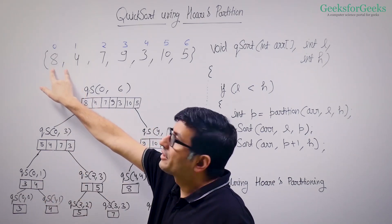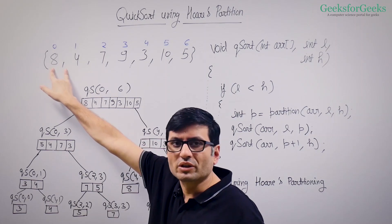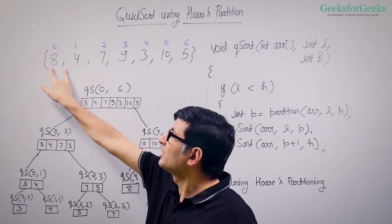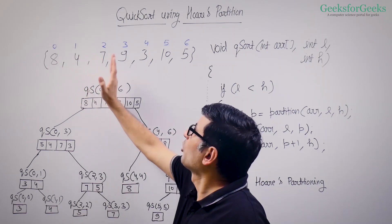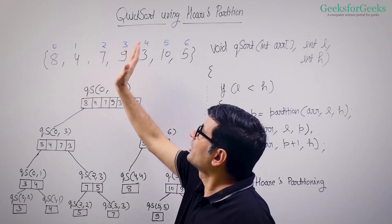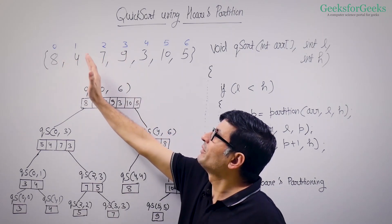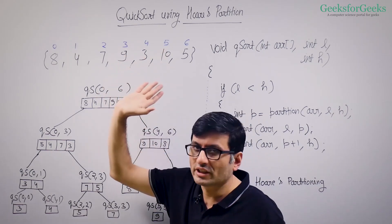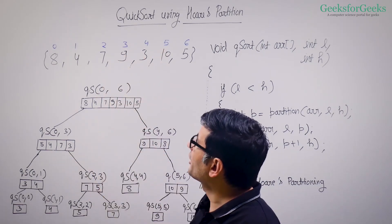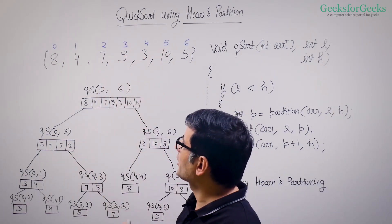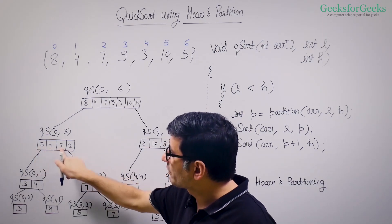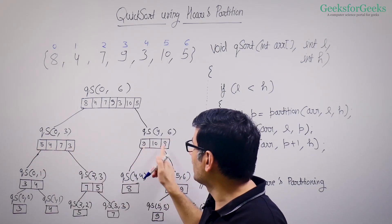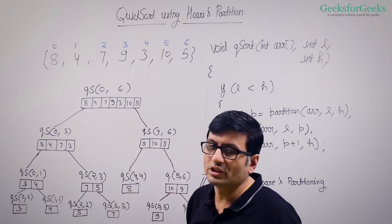Let's take an example using Hoare's partition. We consider 8 as a pivot, and when you call Hoare's partition, all elements smaller than 8 go to the left side and all elements greater than or equal to 8 go to the right side. So 5, 4, 7, 3 go on the left side and 9, 10, 8 go on the right side.